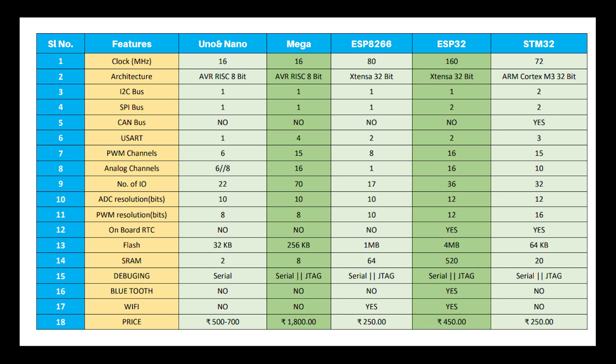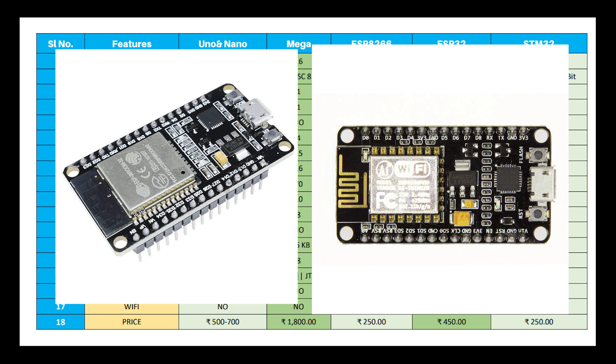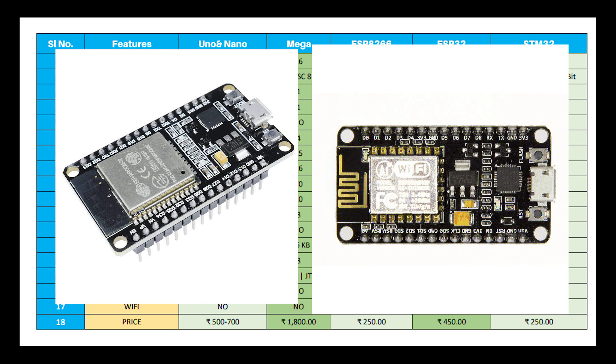In my opinion, if you are making a project which uses normal sensors, LEDs, or motors, you can use ESP8266 or STM32 because they are cheaper than Arduino boards and you can program these boards in the Arduino IDE.